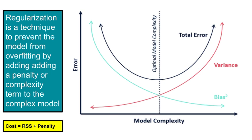Essentially, with regularization we compromise by allowing a little bias for a significant gain — a significant drop in variance. The bias also reduces a little bit, and we try to reach a middle ground. To summarize: we use regularization because we want our model to work well with unseen data without missing the identifying patterns. Regularization prevents overfitting by shrinking the coefficients towards zero.